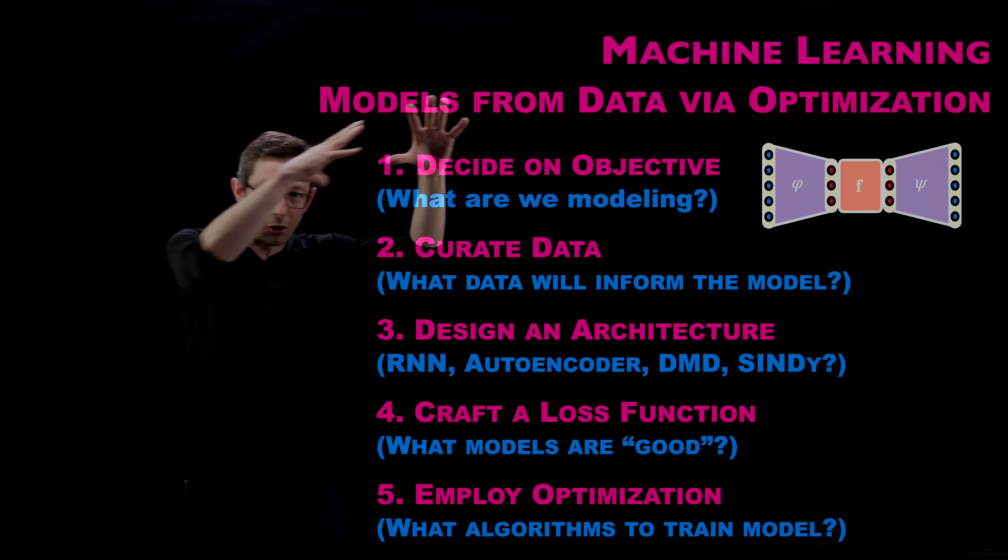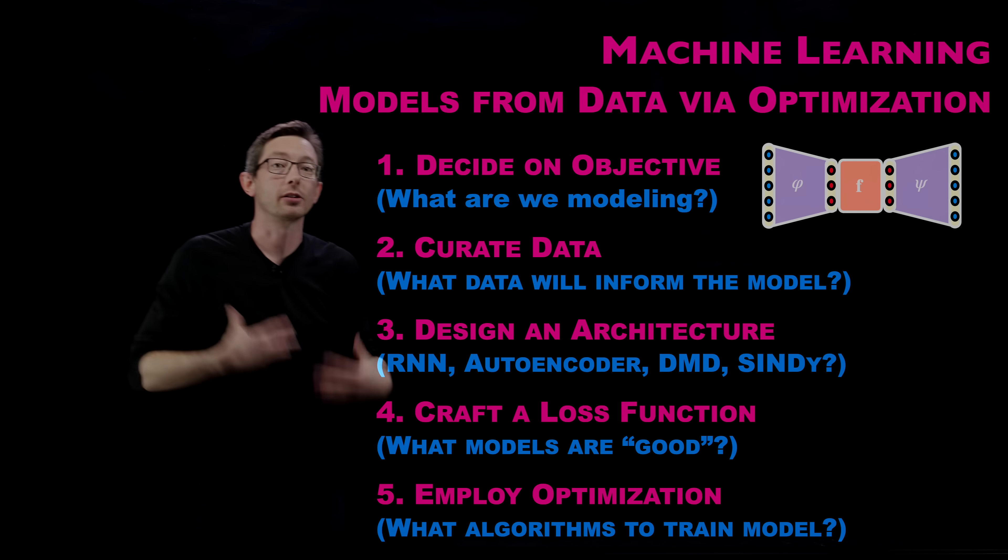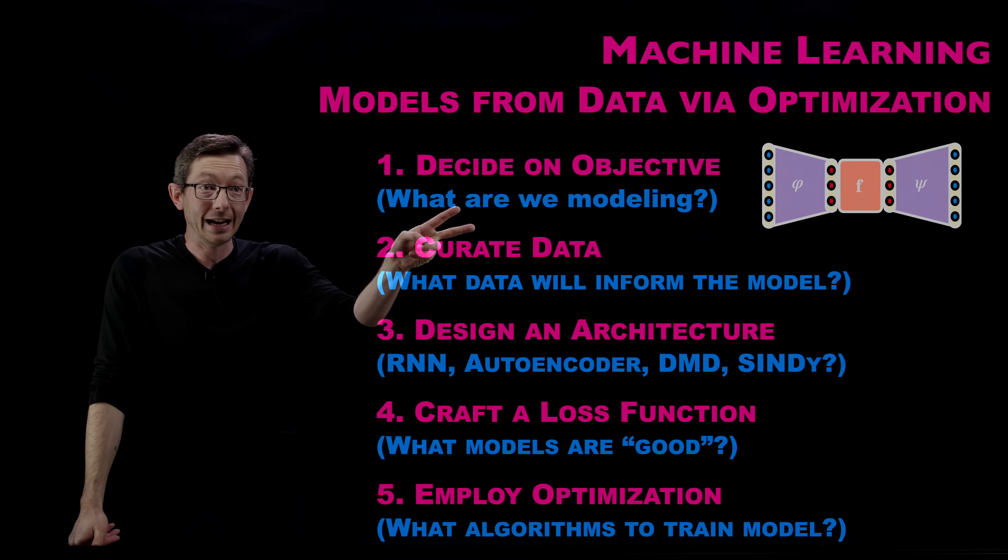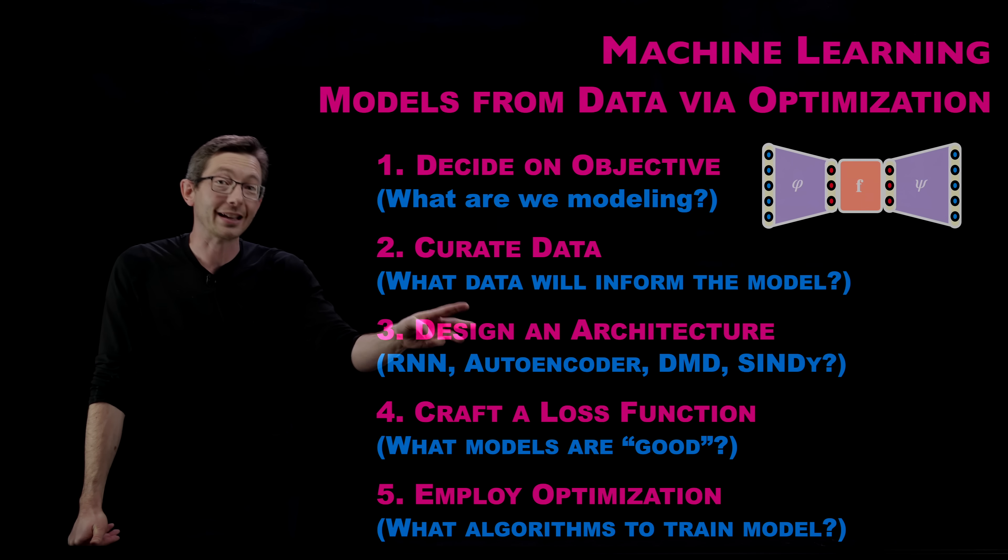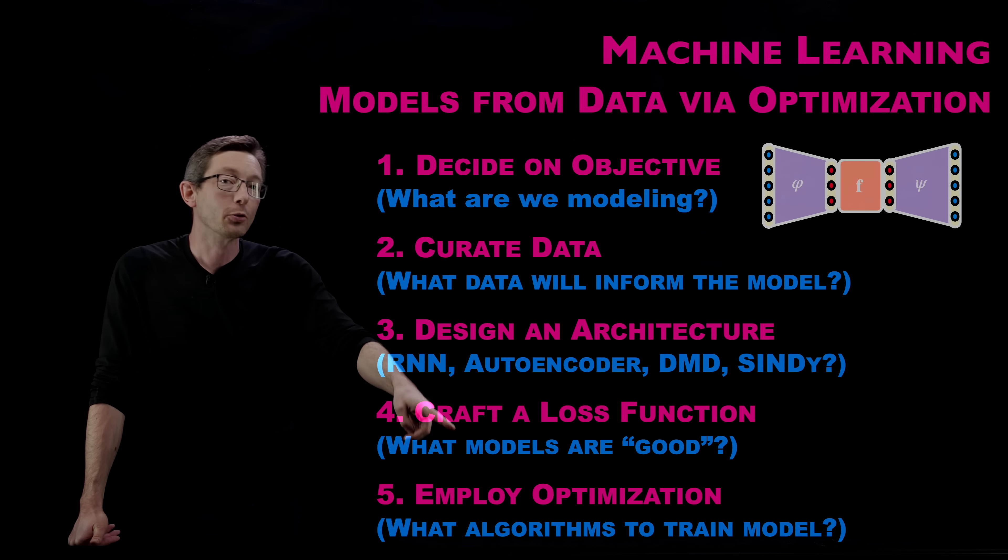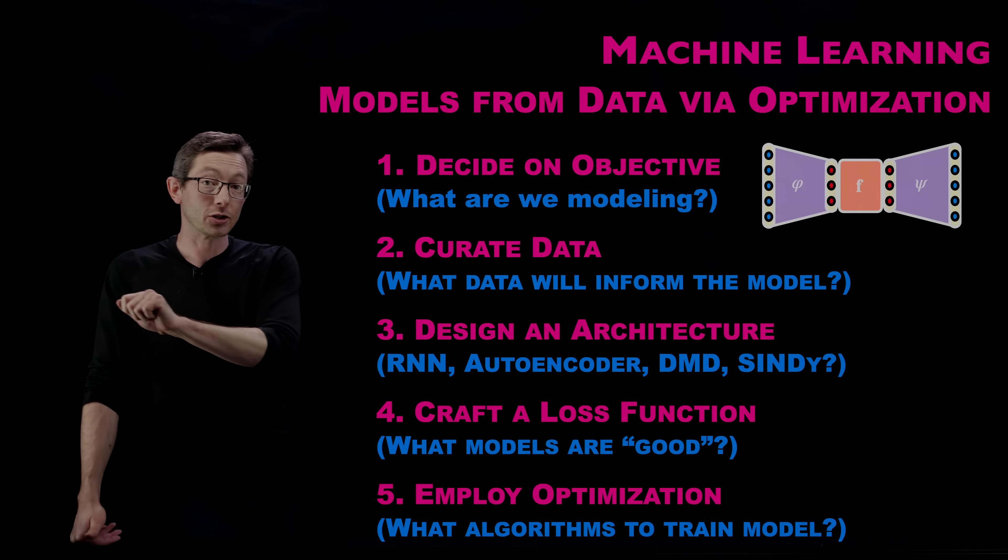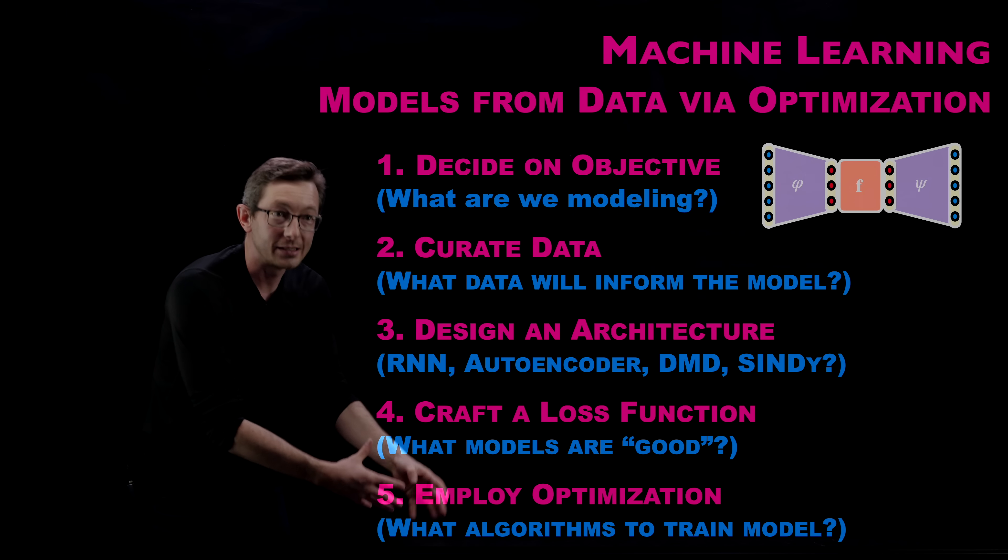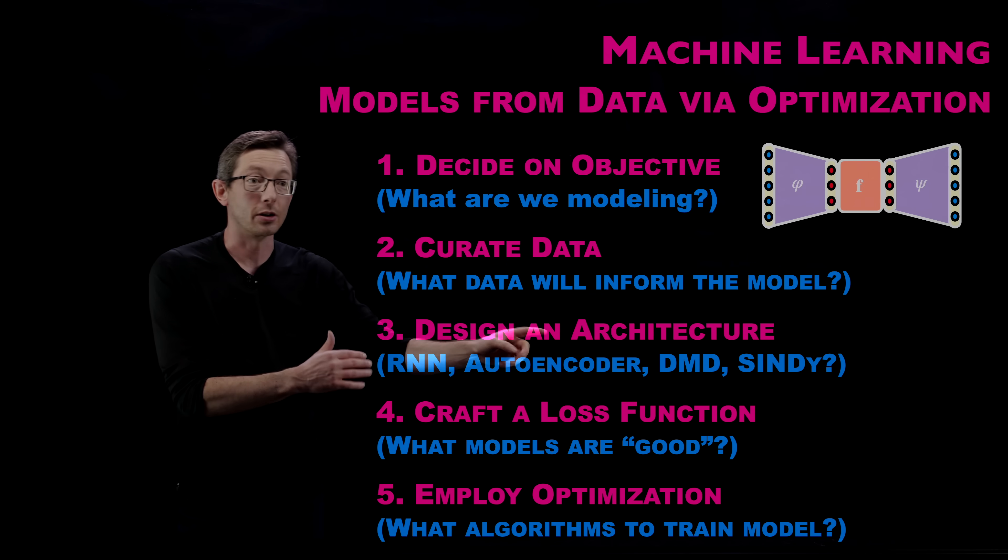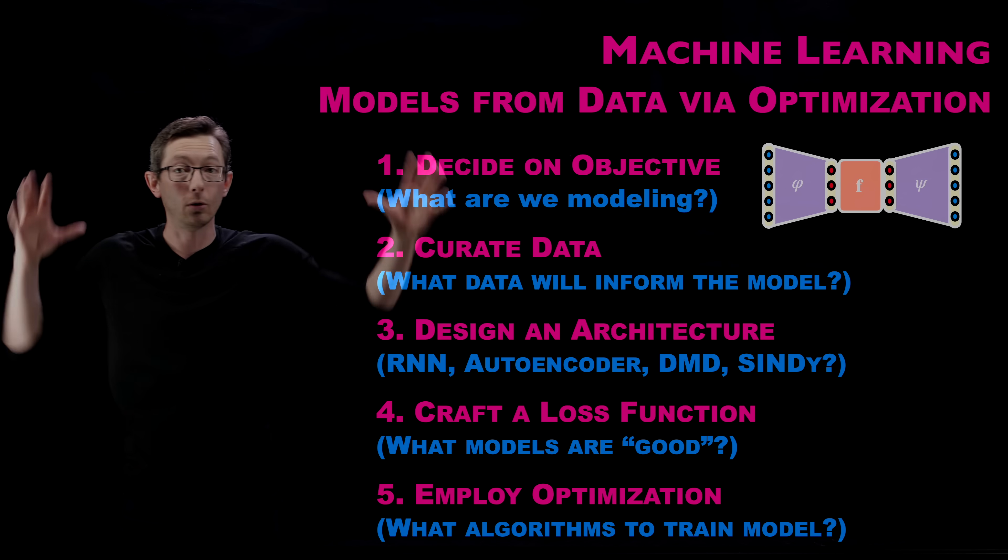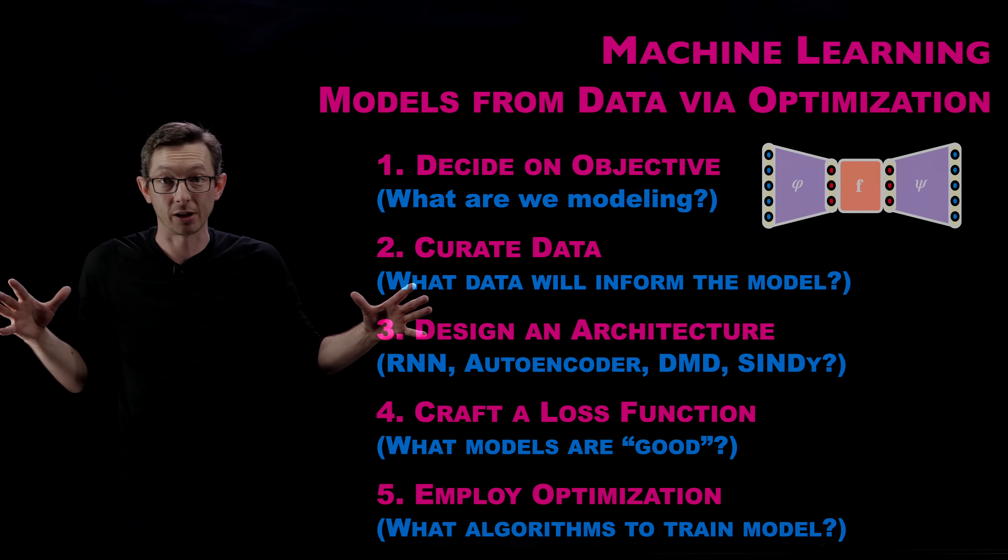This is all a big procedure here that fits together. You have to choose what you're modeling. You have to find data that will inform that model. You pick an architecture that you think can represent the function you're trying to approximate. You write down a loss function or an objective function that tells if you did a good job after the training. And then you optimize the weights of the architecture to minimize that loss function over the data. That's the whole procedure of machine learning in a nutshell.